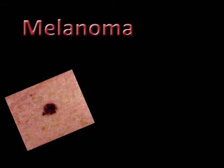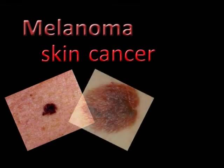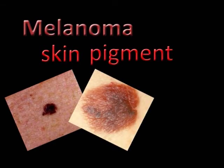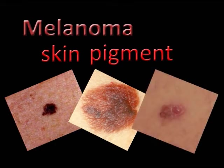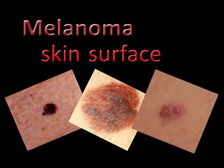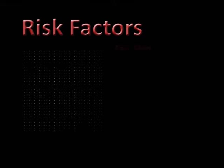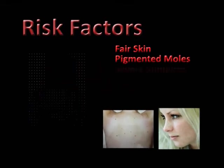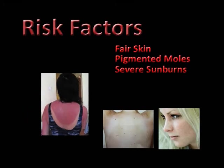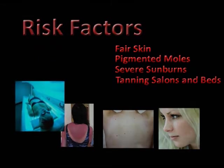Melanoma is a malignant form of skin cancer associated with the dark skin pigment called melanin and is linked with certain moles found on the surface of the skin. Risk factors for melanoma include fair skin, pigmented moles, severe sunburns, and tanning salons or tanning beds.